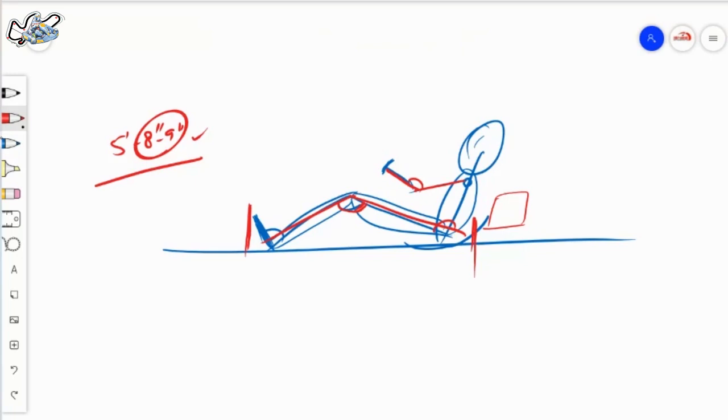We have seen the driver sitting like this, which is a very unsafe position for a driver to drive, unsafe and uncomfortable, both. Just to make the cart shorter, teams make a driver sitting position very compact, and this is unsafe and uncomfortable.